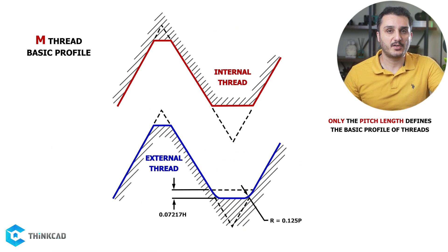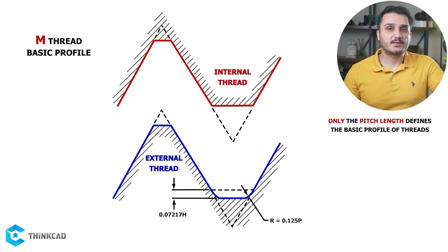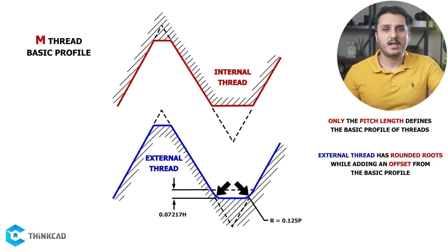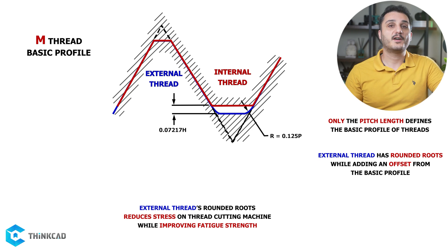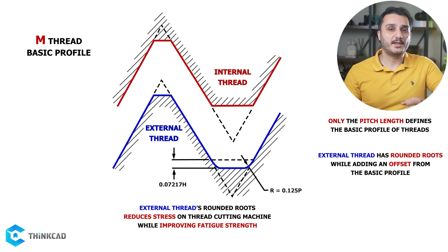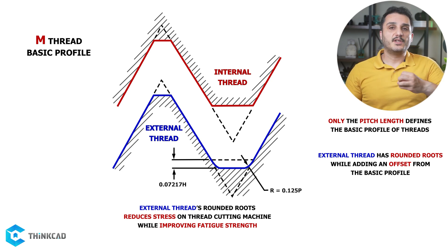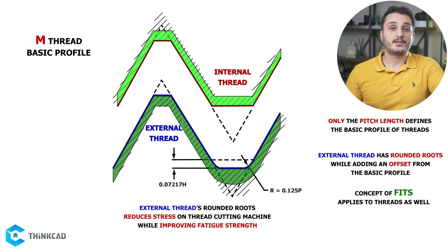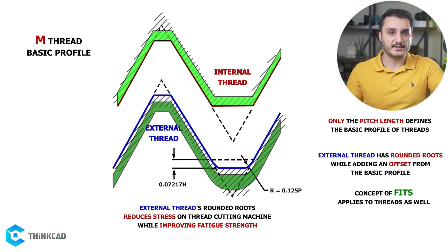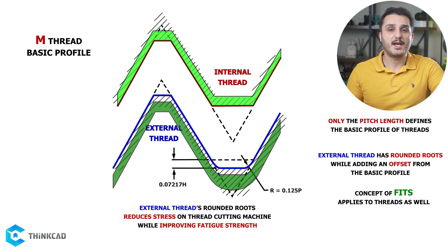Here you can see the basic profile of an internal and an external M-thread — they both follow the same M-thread schematic. There are subtle differences, such as the rounded profile of the external thread on its root and the small offset that the fillet is providing, which creates a small gap when the threads are mated. This is intentional and reduces stress on the thread cutting machine while improving fatigue strength. This is the basic profile, which is our design reference. In reality, we have different fit options between internal and external threads, and based on the fit type and thread size, we get standardized tolerances for both mating threads. In the case of clearance fits, there is always an allowance between mating threads.